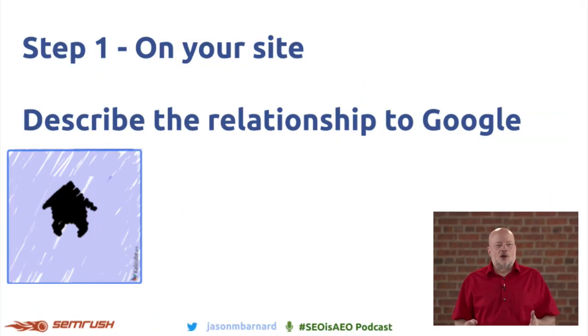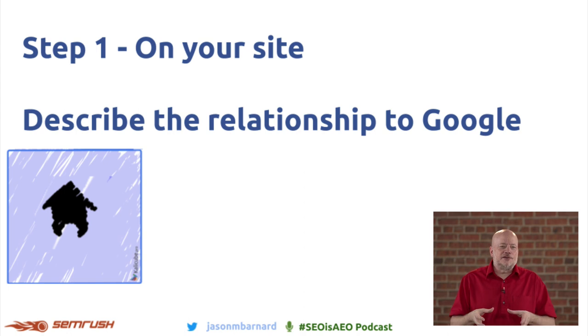What do you need to practically do to get your brand in the Knowledge Graph? You need to explain to Google the relationship between your brand and multiple entities the Knowledge Graph already knows. Step one — and this is really step one — the first thing to do is to do that on your own site.